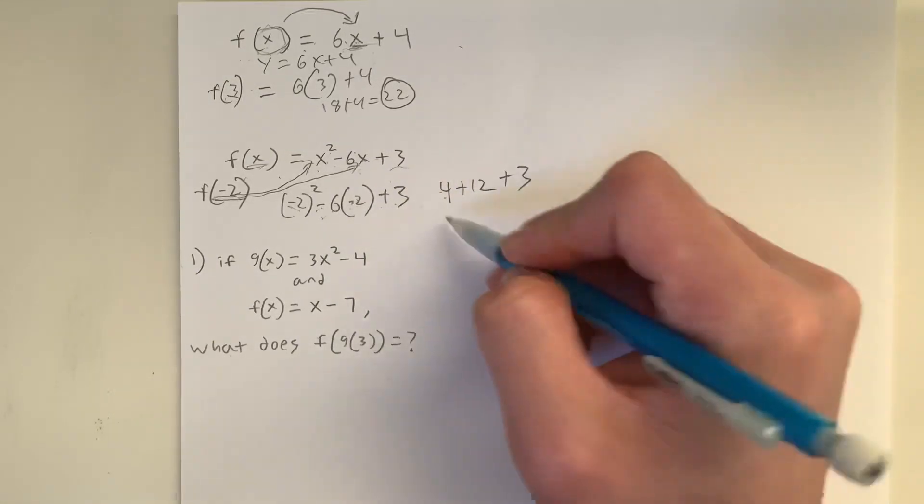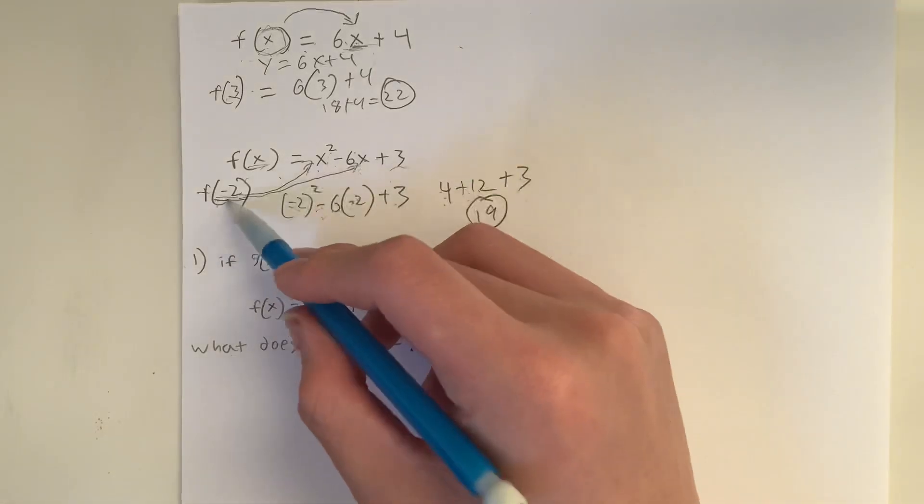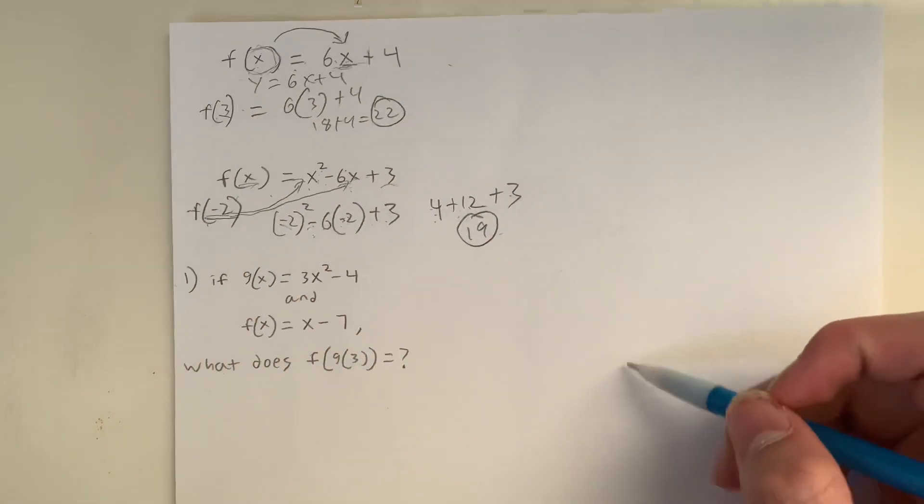And then we plus 3. 4 plus 12 is 16. 16 plus 3 is 19. So the value of f of negative 2 is positive 19.